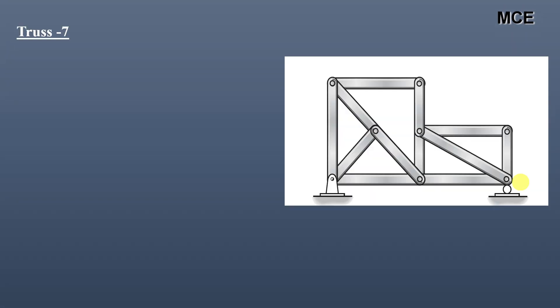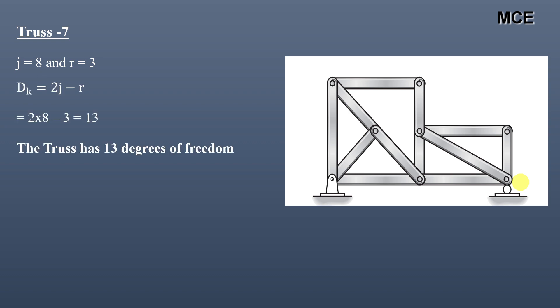For truss seven, this truss has a total of eight joints and three reactions. The value of dk is 13, meaning this truss has 13 degrees of freedom.